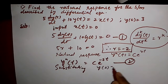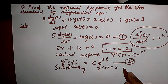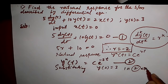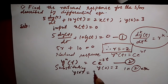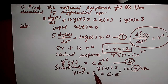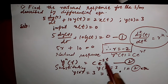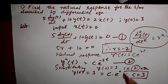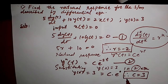Substituting y(0) equal to 3 into the second equation, it becomes: y(0) equals 3, which equals C times e raised to 0. Since y(0) is 3 and t is equal to 0, so 2 times 0 is 0, and e raised to 0 is 1. Therefore, C is equal to 3. We have obtained the value for C equal to 3.